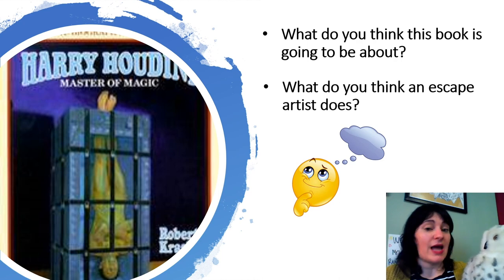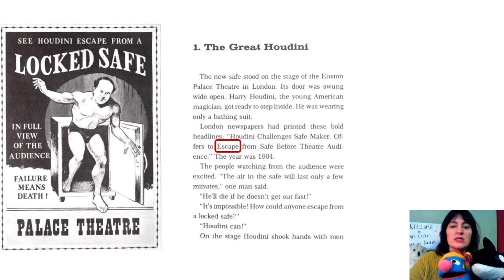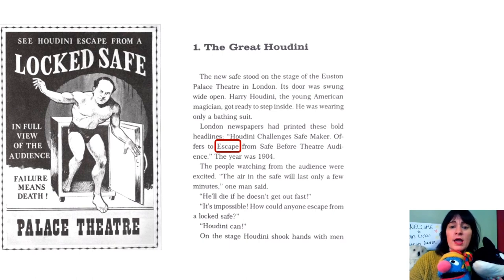I will read the beginning of the book today. Chapter one: The Great Houdini. The new safe stood on the stage of Houston Place Theater in London. Its door was swung wide open. Harry Houdini, the young American magician, was getting ready to step inside. He was wearing only a bathing suit. London newspapers had printed these bold headlines: Houdini challenges safe maker, offers to escape from the safe. Escape means to get out of, and a safe is a locked box where people keep valuable things, so it needs to be tightly closed.